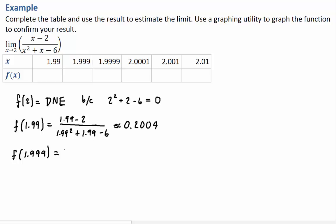That would be 1.999 minus 2 divided by the denominator evaluated at 1.999, which is 1.999 squared plus 1.999 minus 6. It is worthwhile for you to plug it in your calculator and make sure you get the same numbers. It is approximately equal to 0.2004.